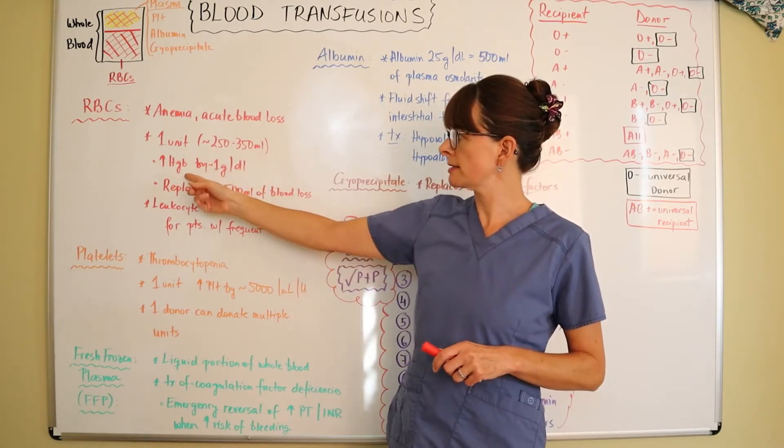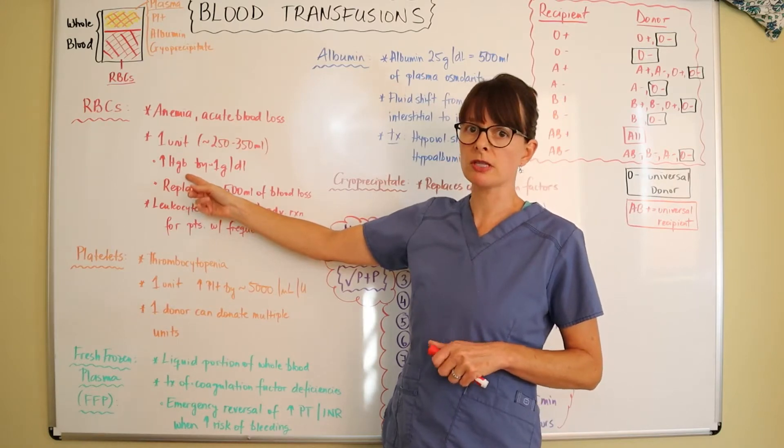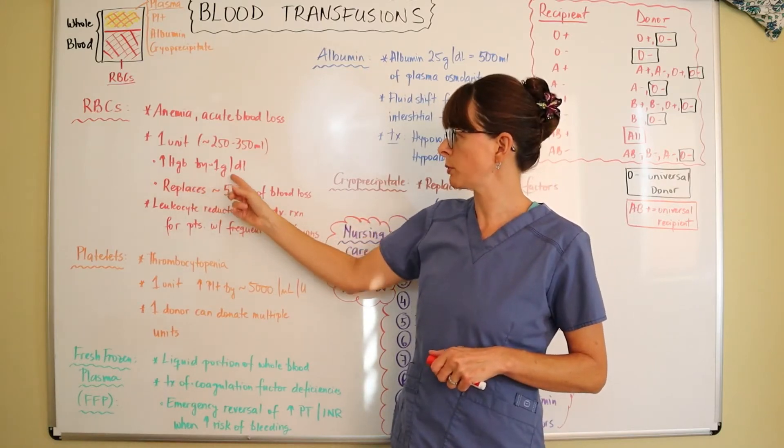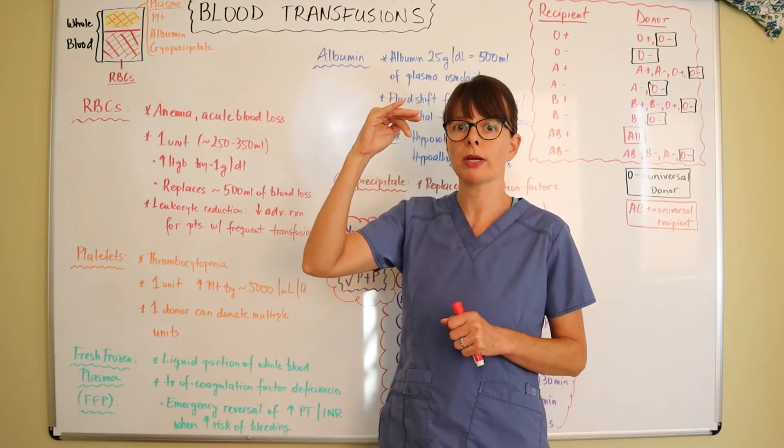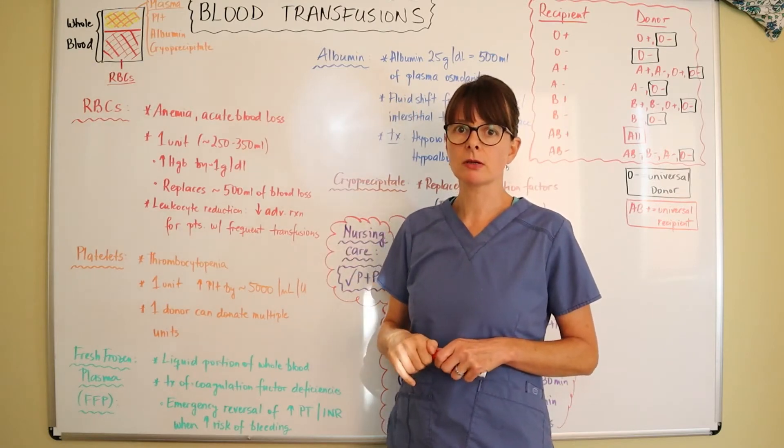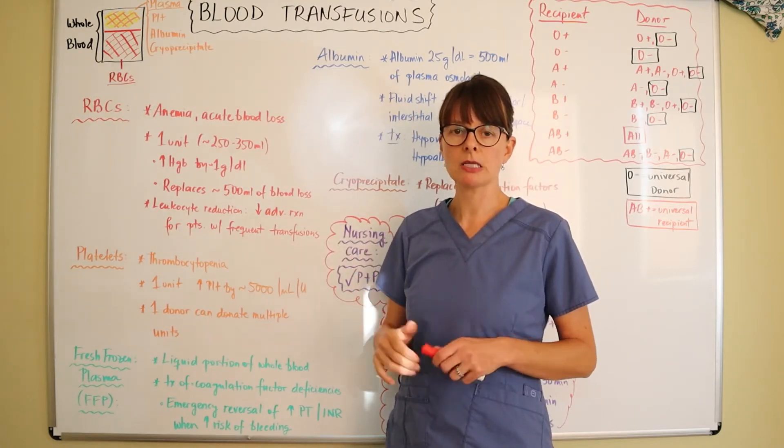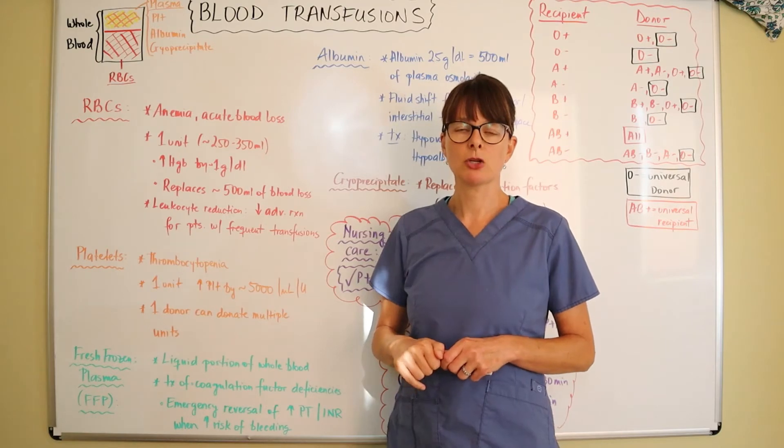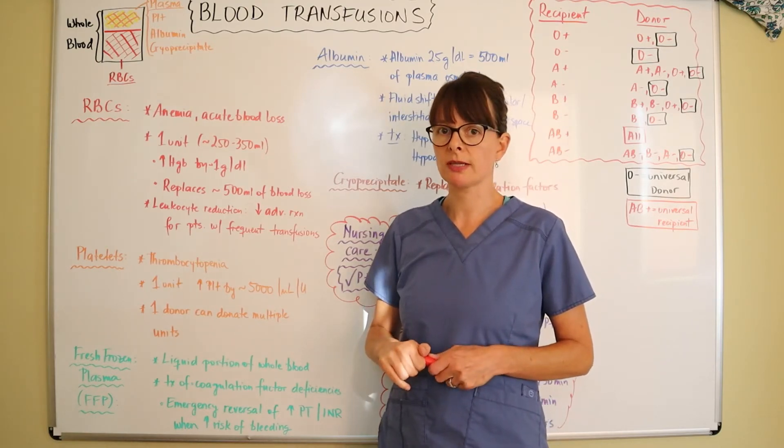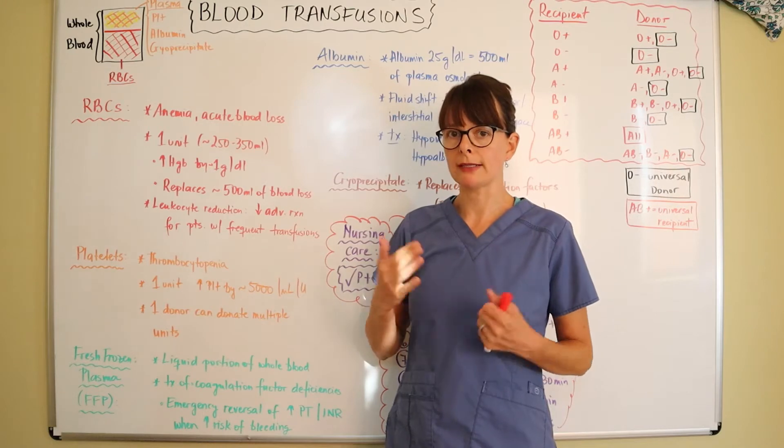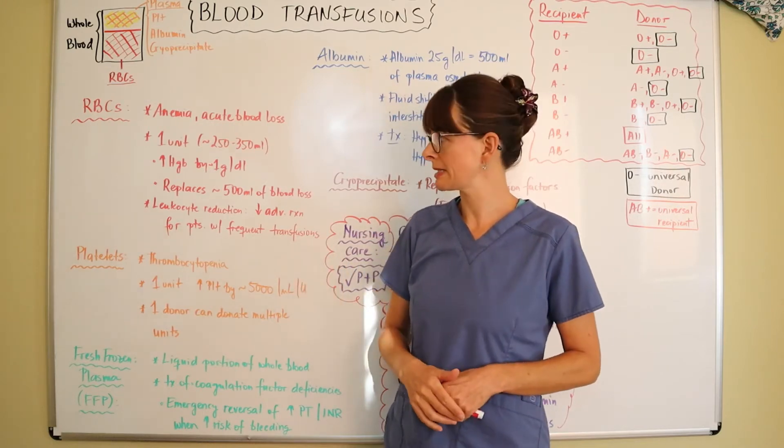One unit of blood typically contains between 250 and 350 ml and has the ability to increase the patient's hemoglobin by about one gram per deciliter. Many times the rules at many hospitals are that the patient needs to have a transfusion once the hemoglobin drops below 7 or 8 depending on the overall circumstances.